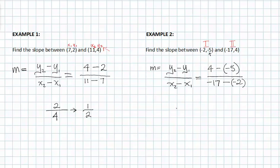Simplifying my fraction I get 4 plus 5 over negative 17 plus 2, which again reduces to 9 over negative 15. And again that has a common factor of 3, so it reduces to 3 over negative 5.